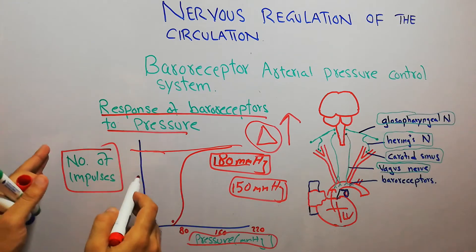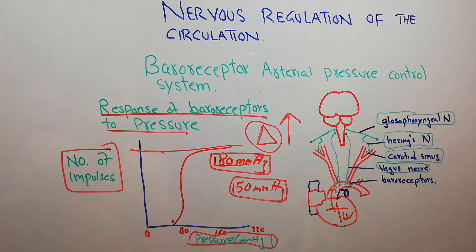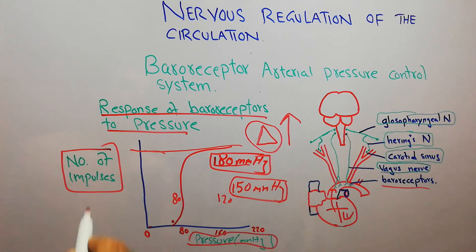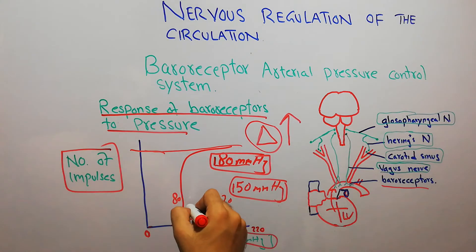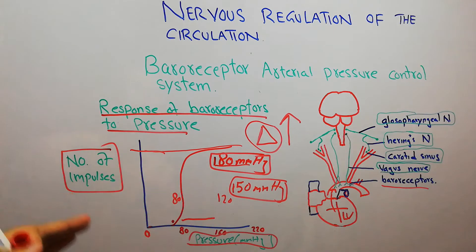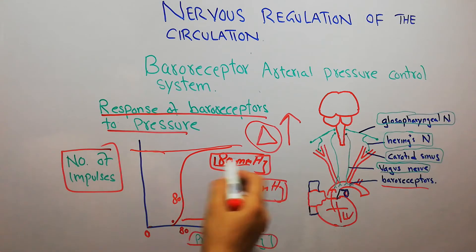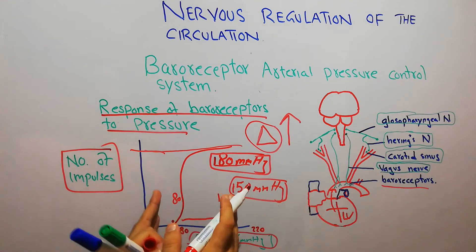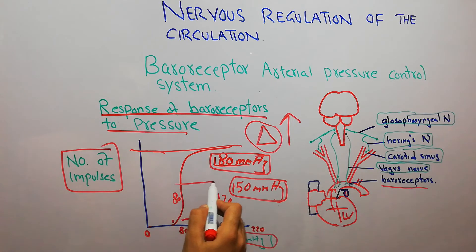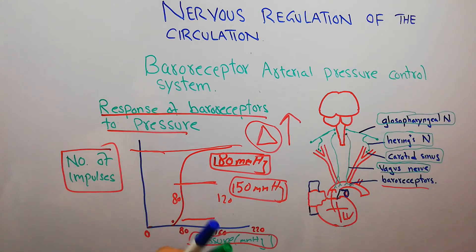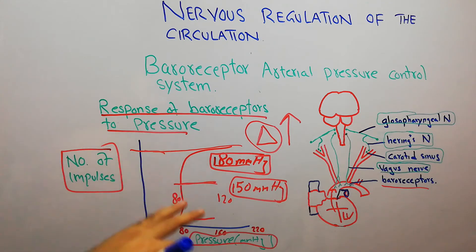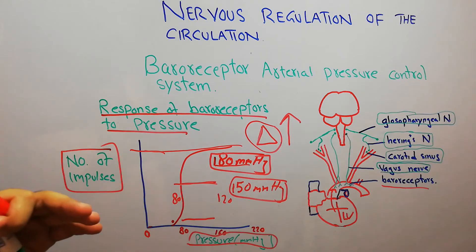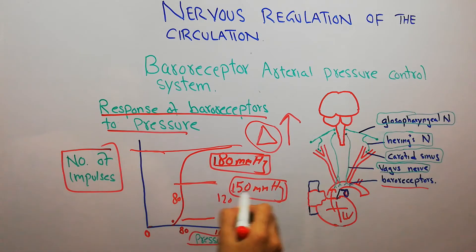These baroreceptor mechanisms are most active around 80 to 120 mmHg. In this range, impulses carried to the brain increase tremendously with even a slight change in pressure. Once pressure has reached around 180 mmHg, there is not much further increase in impulses. The body is basically trying to keep arterial pressure in the range of 80 to 120 mmHg, which is why the system is designed so that the number of impulses increases most rapidly in this range and responds more strongly to rapid changes than to sustained high pressure.